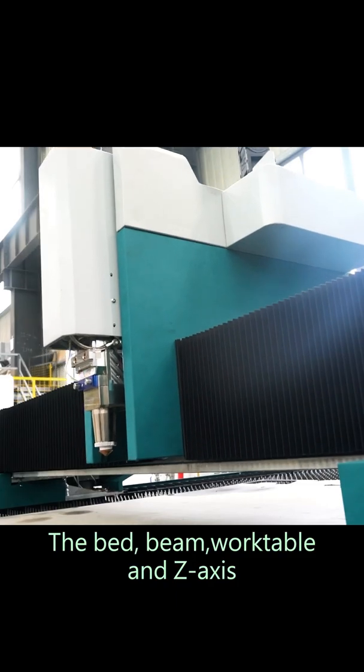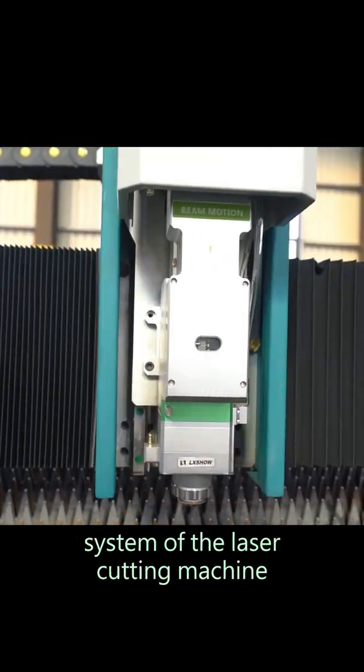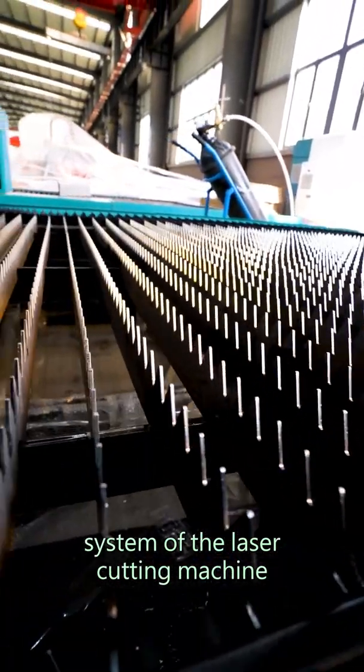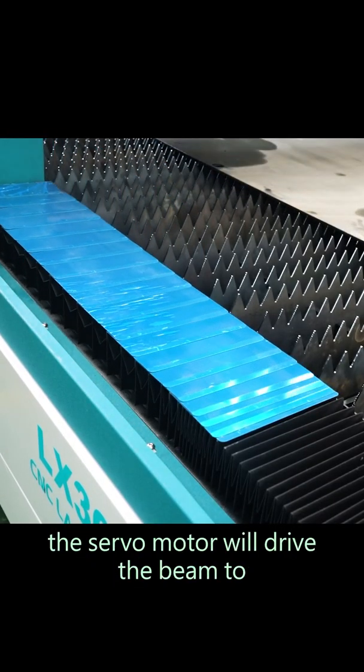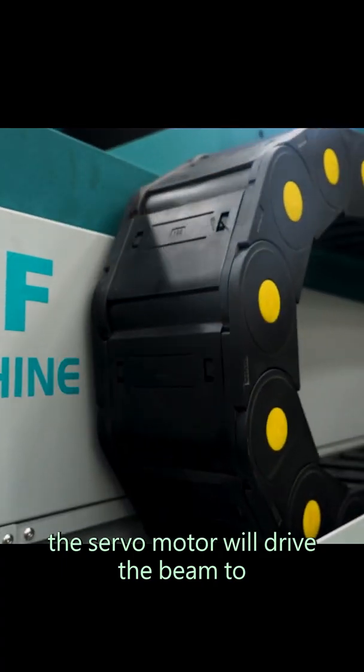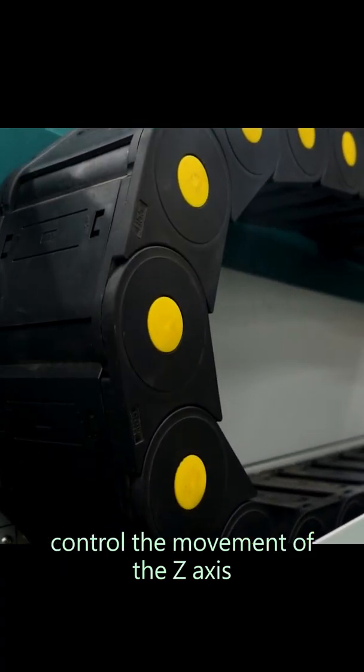The bed, beam, work table, and the Z-axis system of the laser cutting machine are collectively referred to as the host. When the laser cutting machine is cutting, the servo motor will drive the beam to control the movement of the axis.